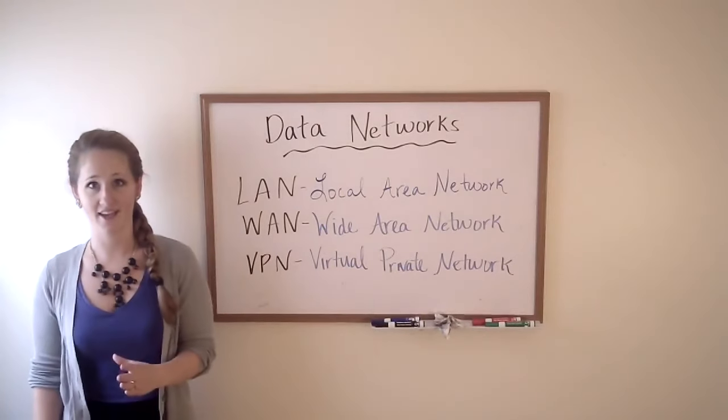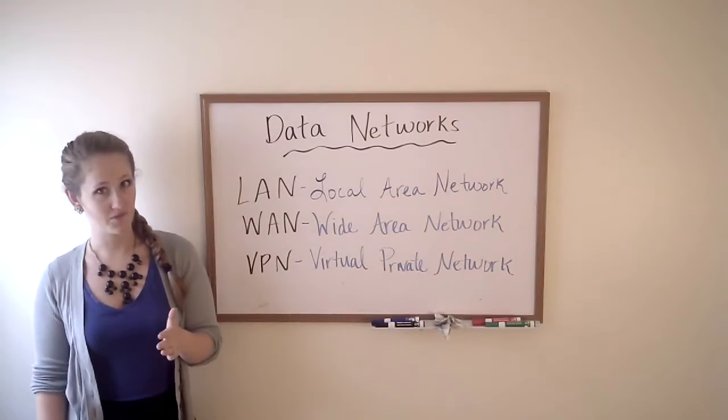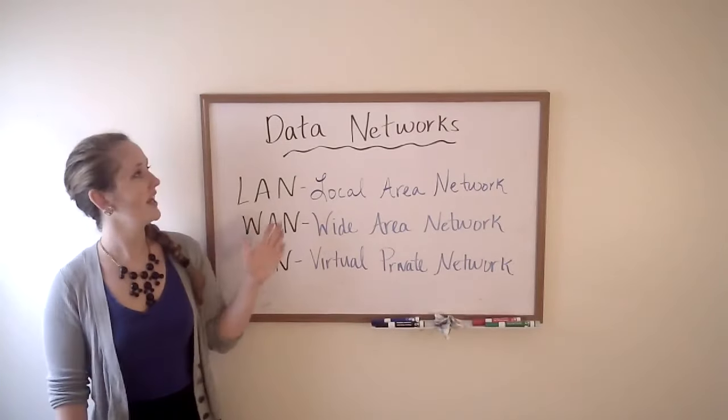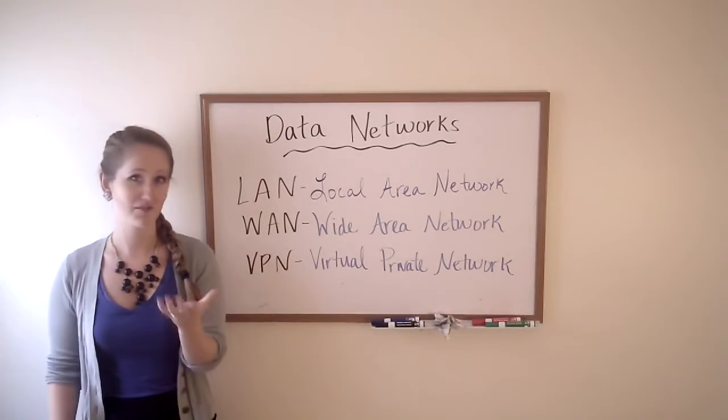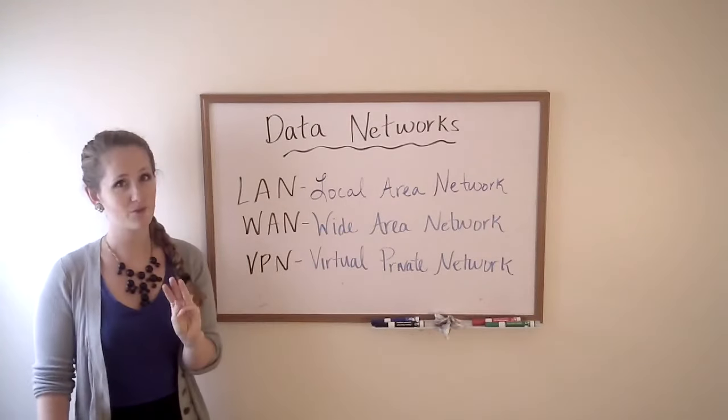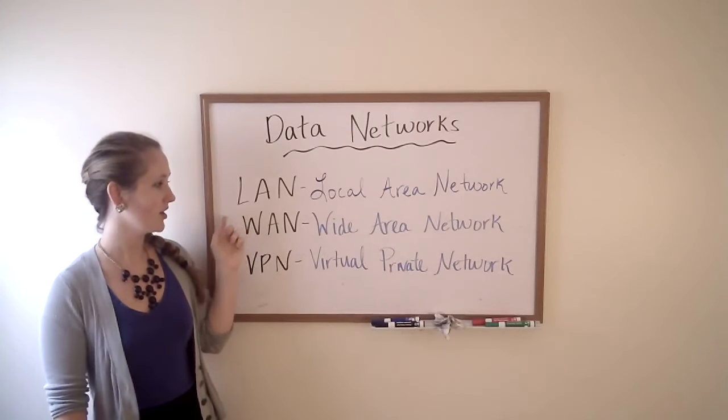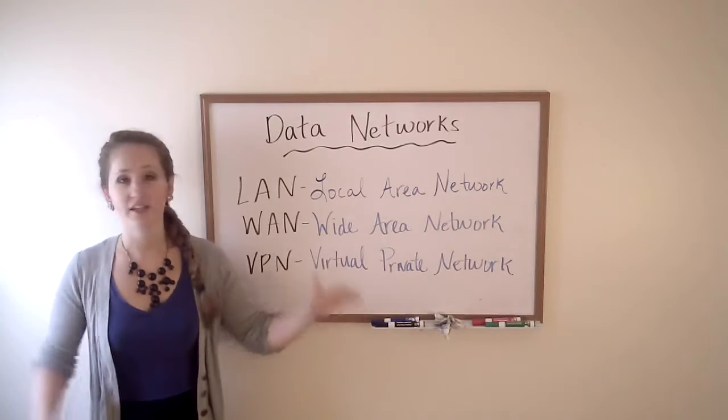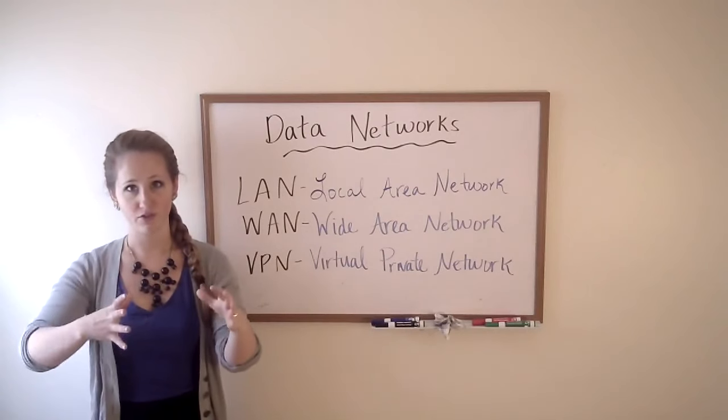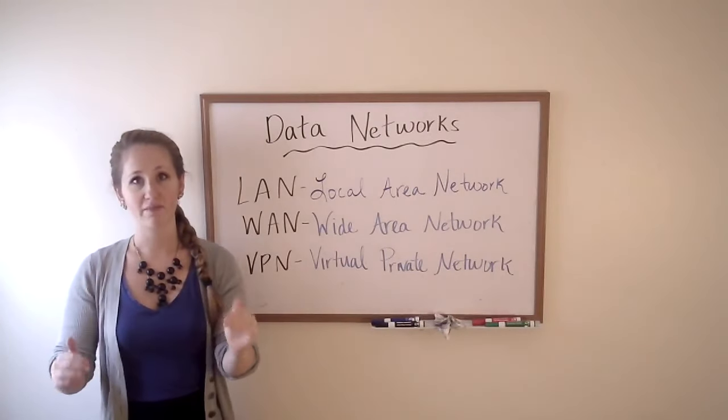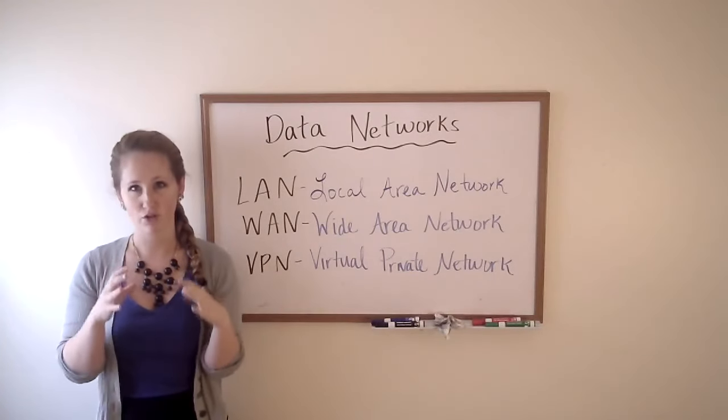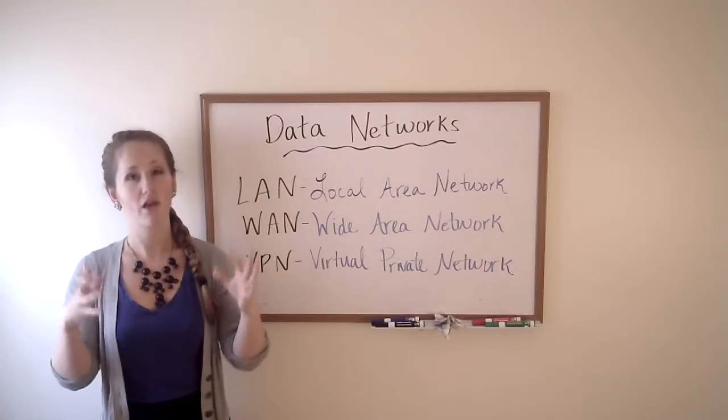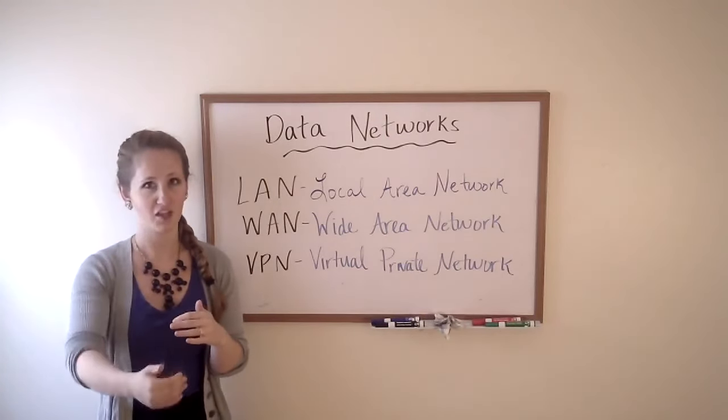Today we're going to be talking about data networks. You've heard of networks before, maybe a water network, a road network, even a television network, or a cell phone network. Today we're talking about data networks, which are the networks that computers use. The three types we're going to cover in this video are the local area network, the wide area network, and the virtual private network. A local area network is just a small group of computers that are connected together. The most important thing about a local area network is that those computers are close together. So your Wi-Fi at Starbucks or at a school, that is the local area network that you can only connect to if you're actually close to that.